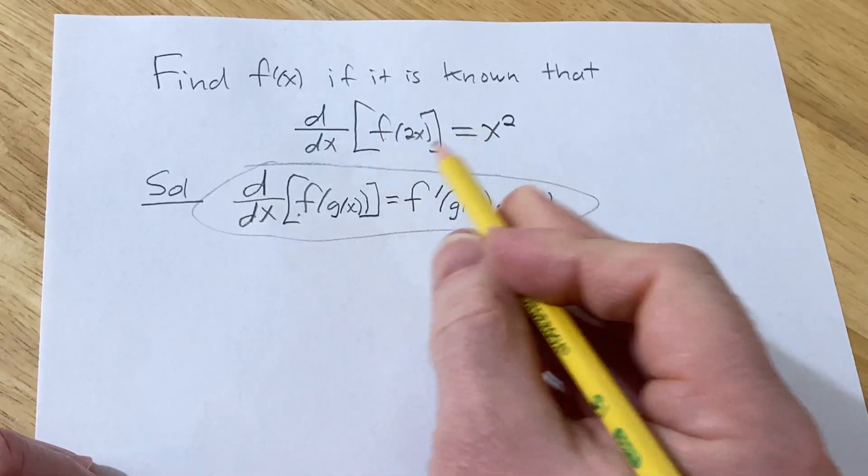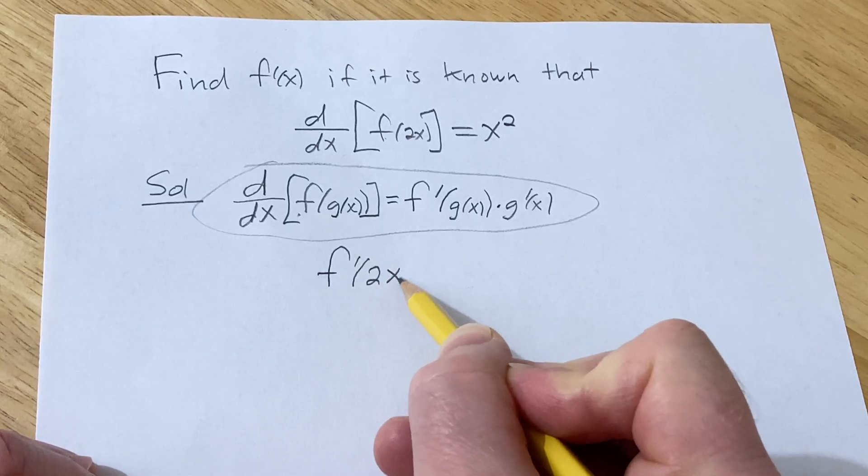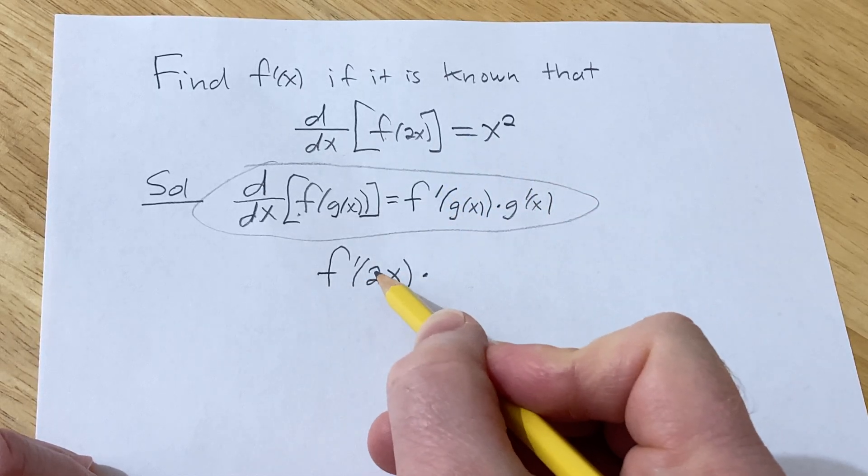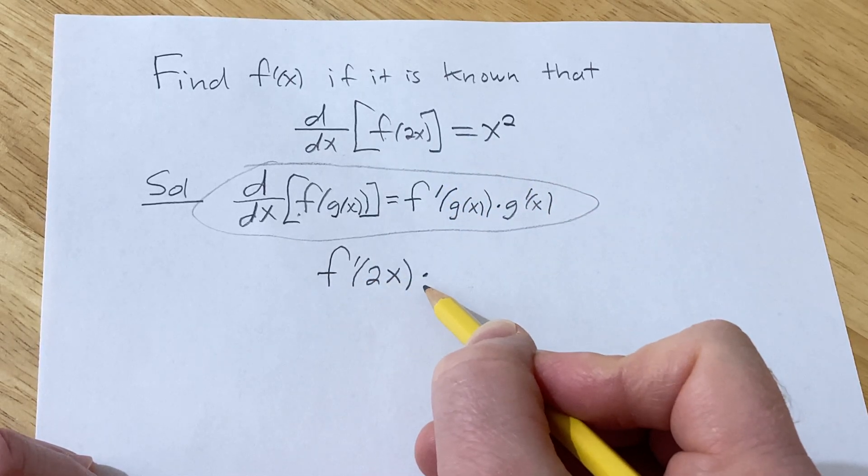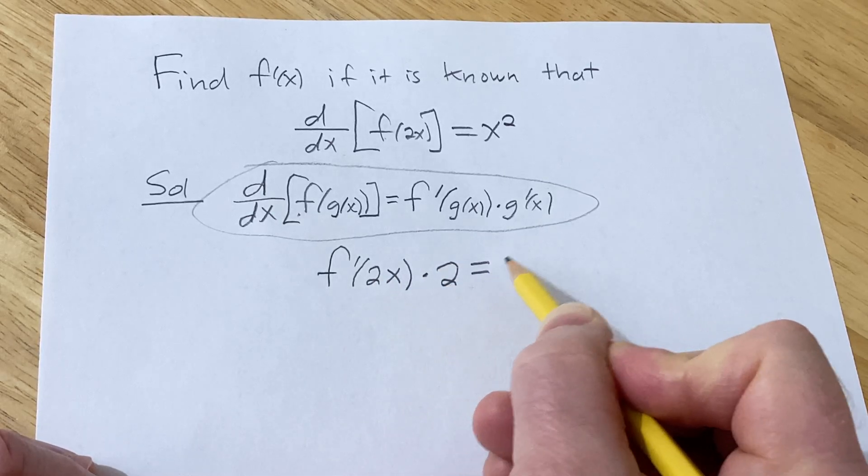So here, we'll take the derivative of the outside, leave the inside untouched so it's evaluated at the inside, times the derivative of the inside. We're taking the derivative with respect to x, so the derivative of 2x is just 2. And this is equal to x squared.